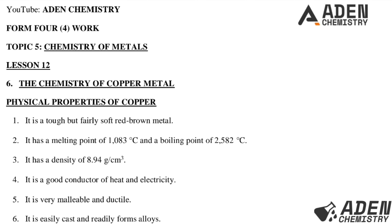In our class today we will be dealing with: number one, the physical properties of copper metal; number two, the chemical properties of copper metal; number three, the uses of copper metal; number four, the effects of extraction of metals on the environment; and lastly number five, we will be concluding with two extended questions on the chemistry of copper metals.